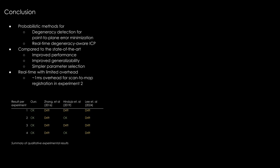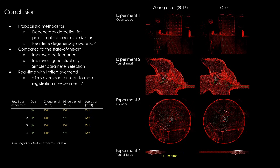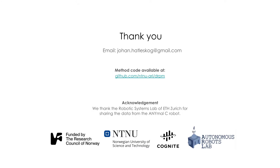We have presented probabilistic methods for degeneracy detection and degeneracy-aware ICP. In four experiments, we have demonstrated improved performance and generalizability compared to the state-of-the-art. Additionally, parameter selection is simpler than for the method of Sangatal due to our method's first principles formulation. The method runs real-time with limited overhead. The code for our method is available open source on GitHub. Please see our paper for more information about the method and the experiments.